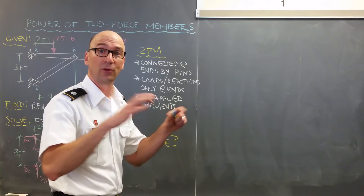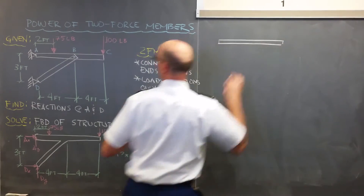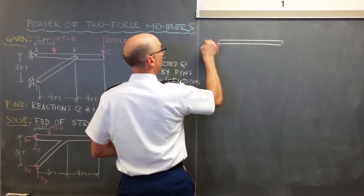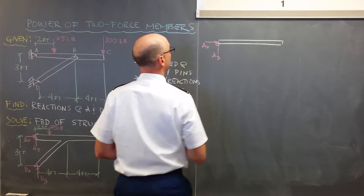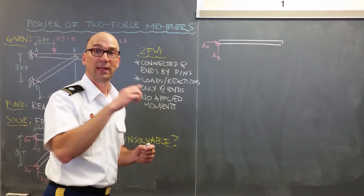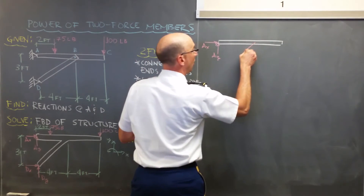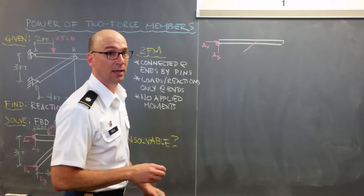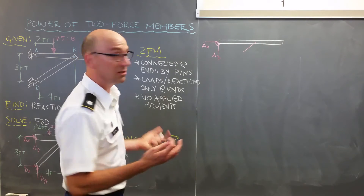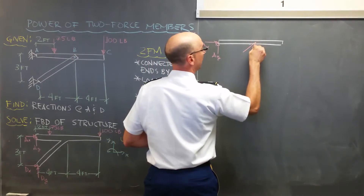In frame analysis, we pull the pins and draw free body diagrams of the individual members. We'll isolate member ABC. At A, we have an x and a y component. At B, we would originally have said x and y, but we now know member BD is a two-force member, so it will have a force acting along the direction of its axis. Whether it's pushing or pulling on ABC, the math will tell us — it's likely pushing back on ABC, so we'll draw it that way.